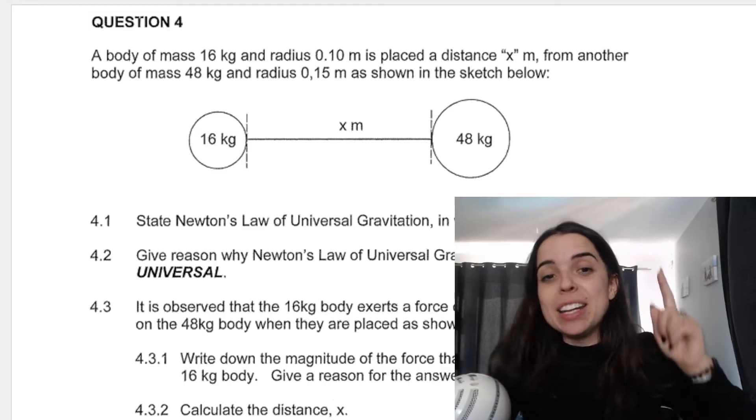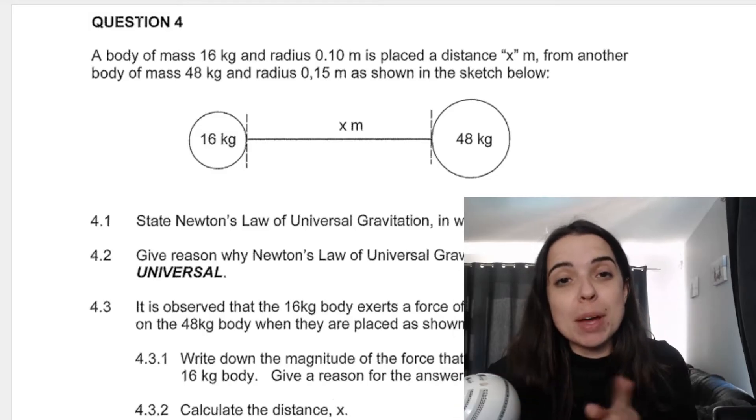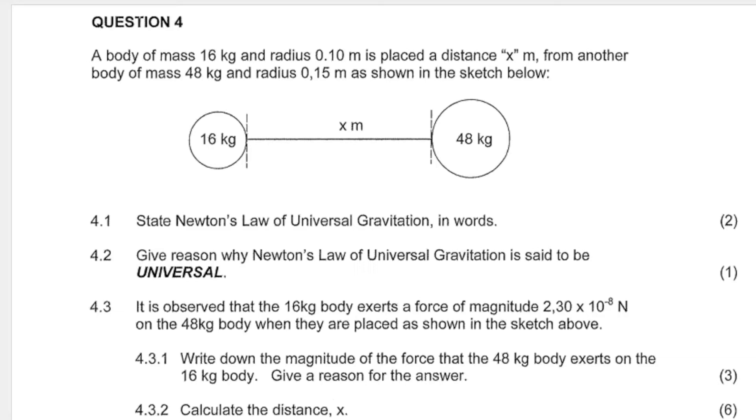Let's jump right in to this question which comes from a past exam paper and it says a body of mass 16 kilograms and radius of 0.1 meters is placed x distance apart or x distance away from another body, mass 48 kilograms, radius 0.15 meters.